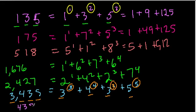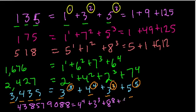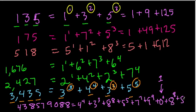438,579,088. Now we're in the 100 millions. This is the same thing as 4 to the 4th plus 3 to the 3rd plus 8 to the 8th plus 5 to the 5th plus 7 to the 7th plus 9 to the 9th plus 0 to the 0, which we'll treat as 1 for this case. Usually that's not considered to be 1, but that's another discussion.